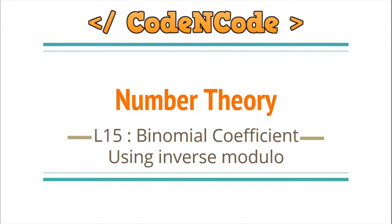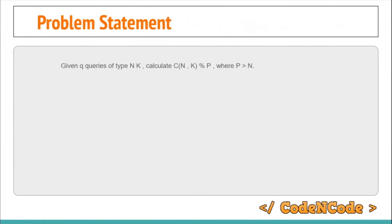Hello guys, this is Code and Code and this is the 15th lecture of this number theory series. In this lecture we are going to study how we can calculate binomial coefficient using inverse modulo. The problem is simple: you are given q queries, and in each query you are given two numbers n and k, and you have to calculate n choose k and print it modulo p, where p is a prime number greater than n.